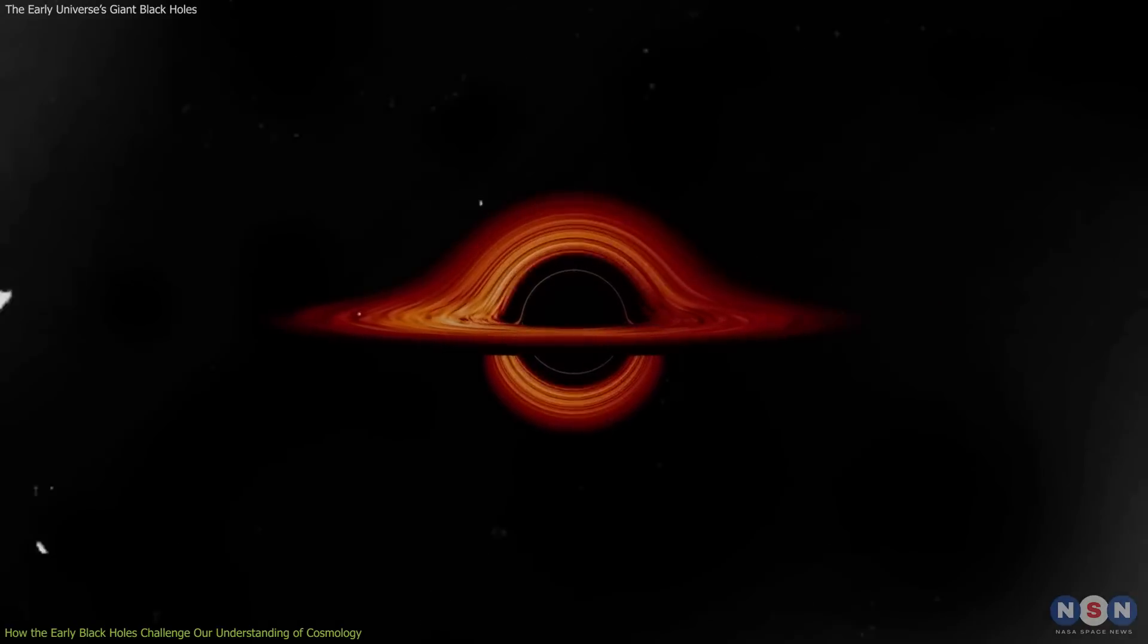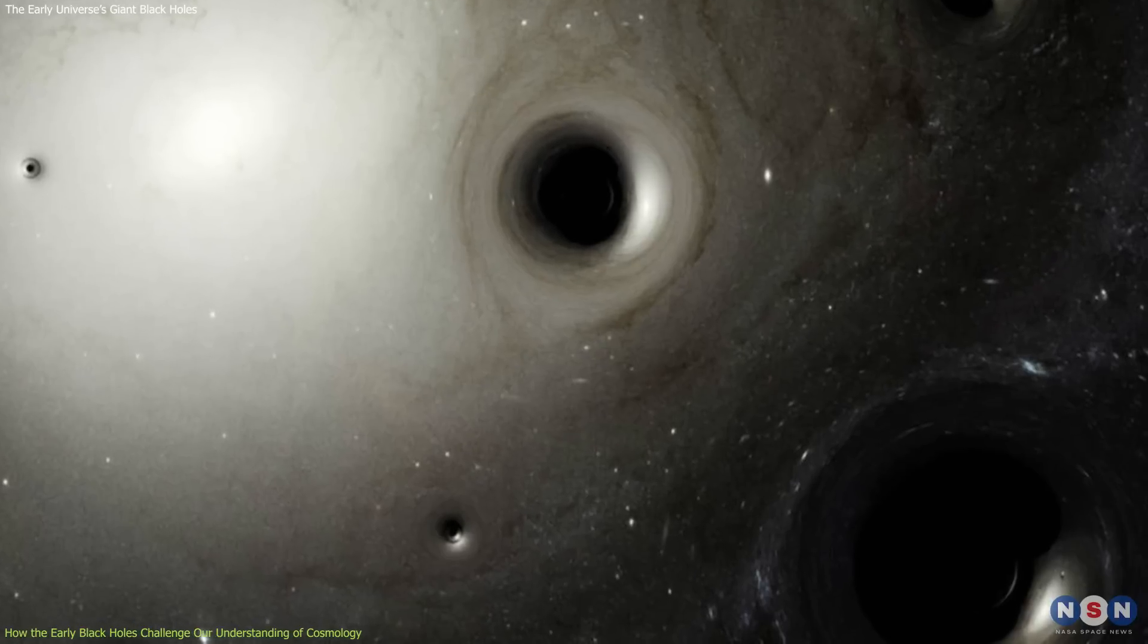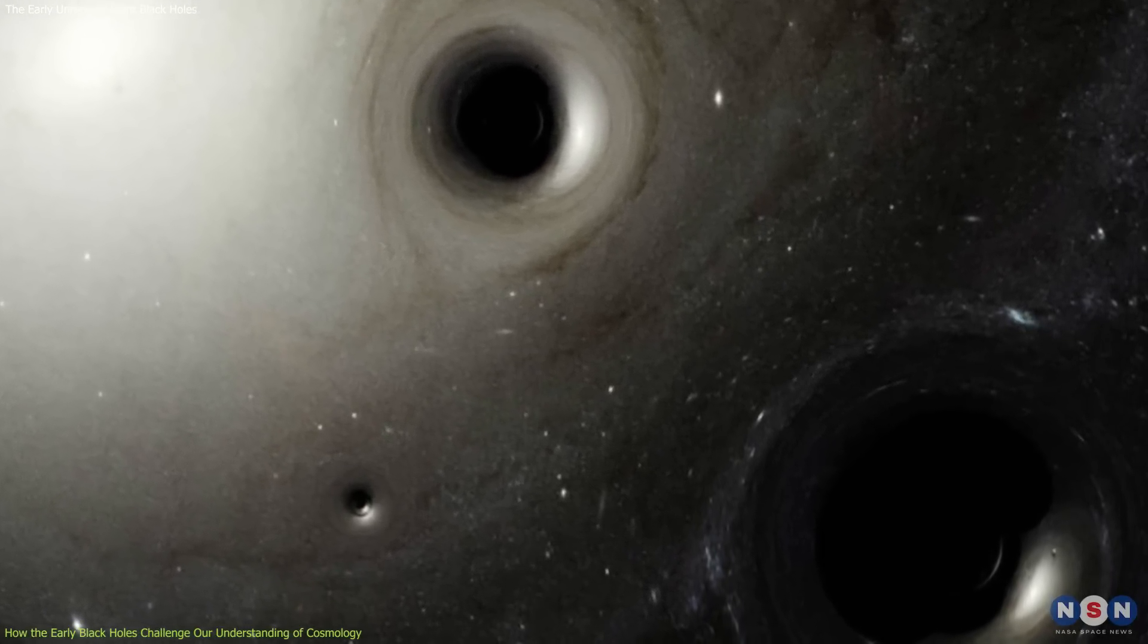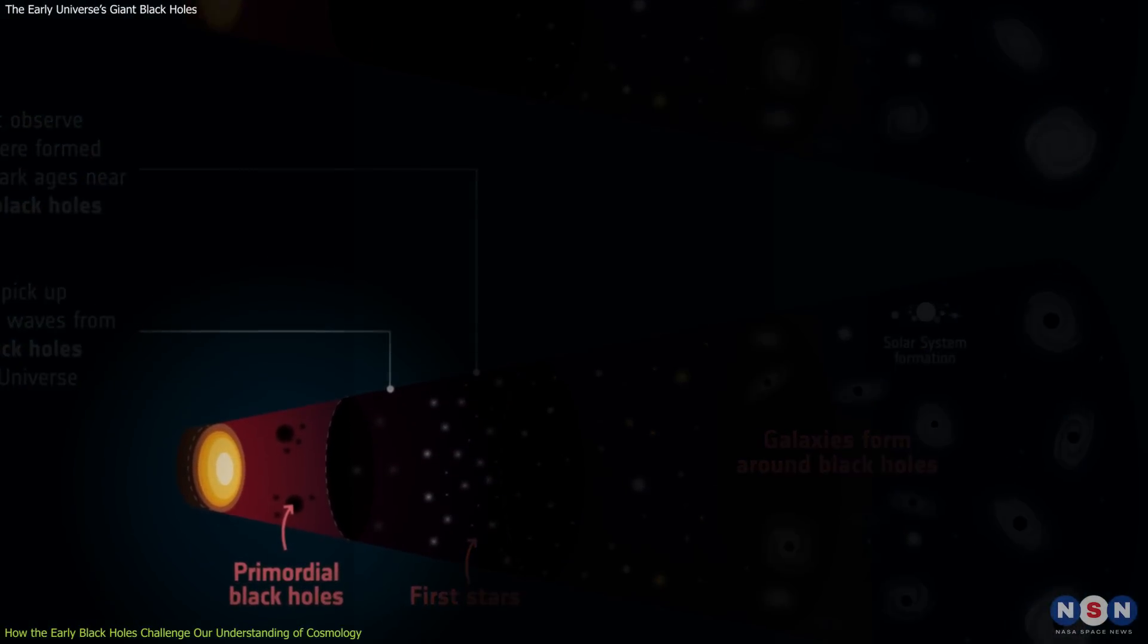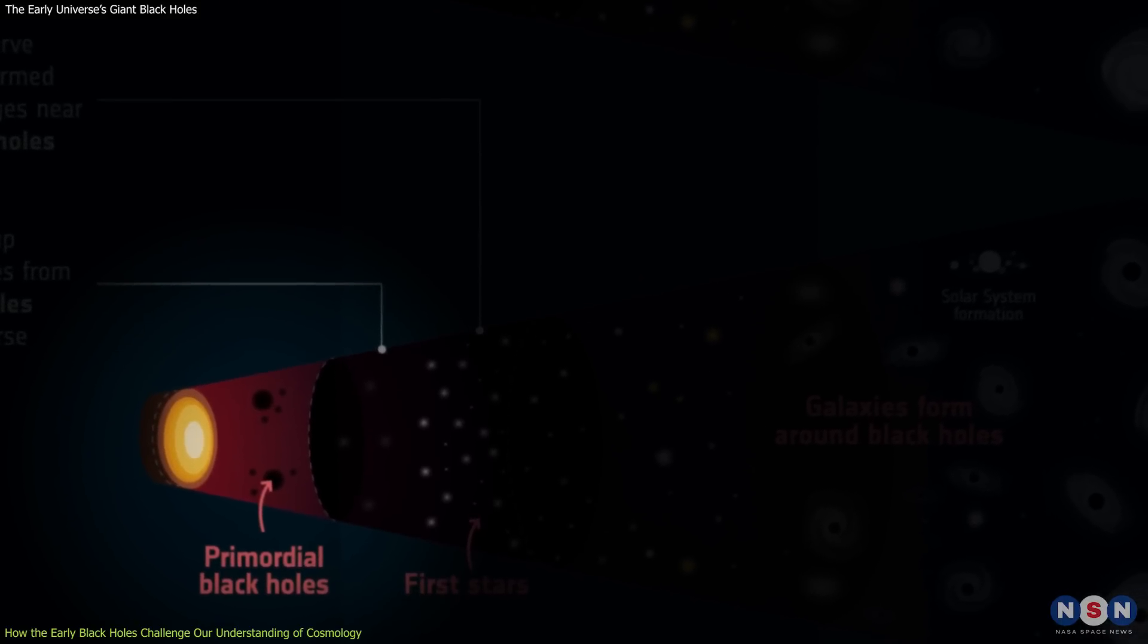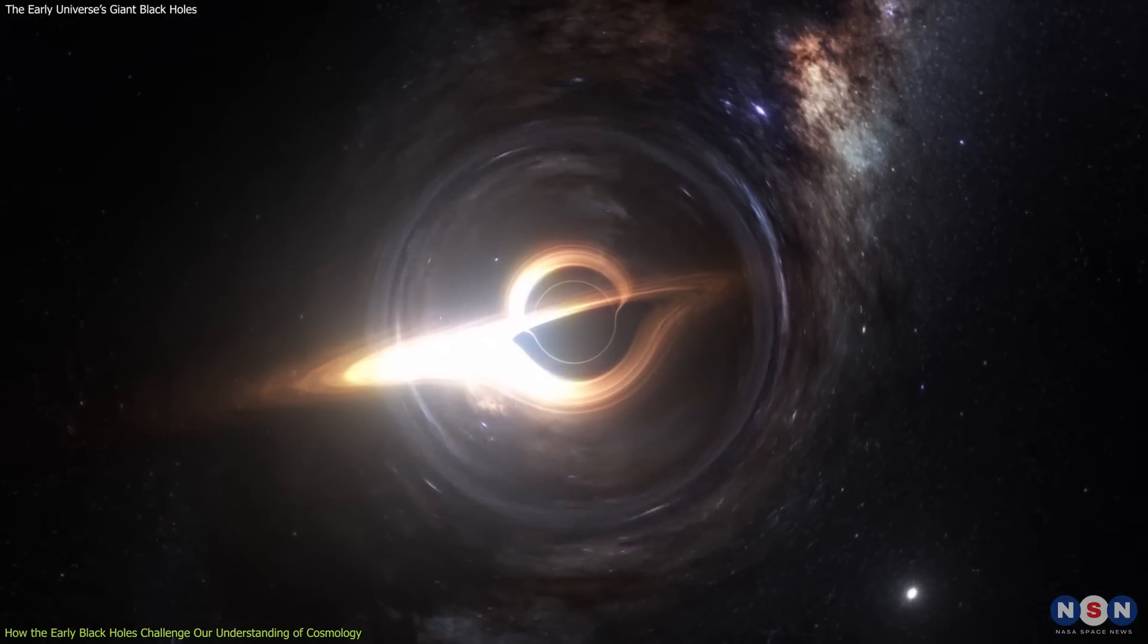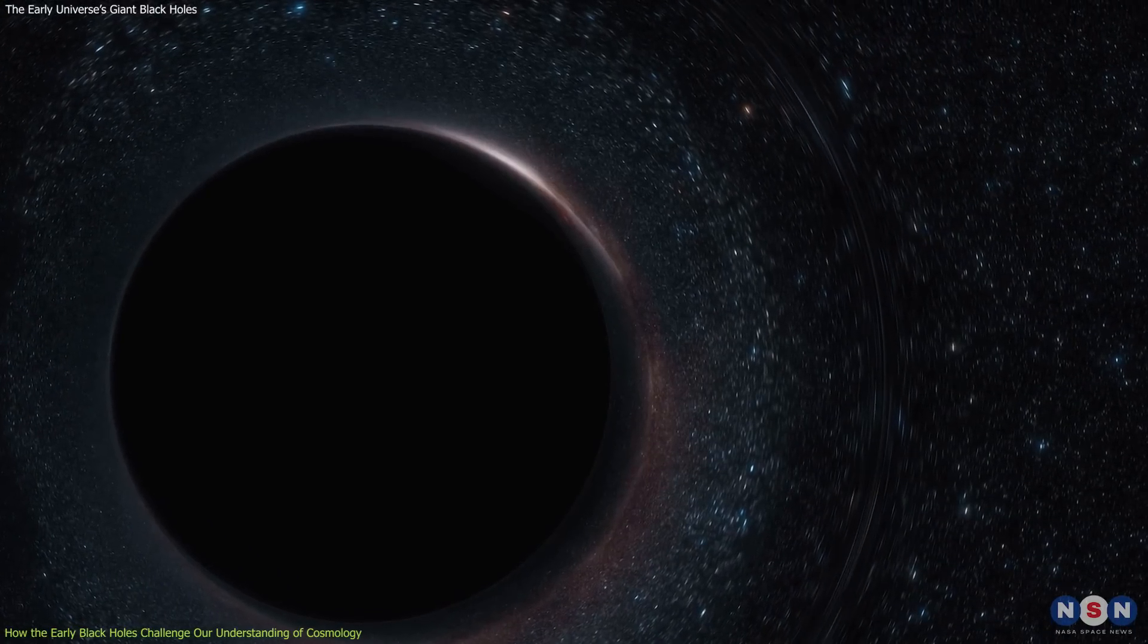We discussed some of the possible solutions to this problem in previous episodes. One possibility is that these supermassive black holes started as primordial black holes, which are hypothetical black holes that formed in the first moments after the Big Bang due to quantum fluctuations or cosmic inflation. These primordial black holes could have masses between 10 and 1,000 times that of our Sun, giving them a head start in growing into supermassive ones.